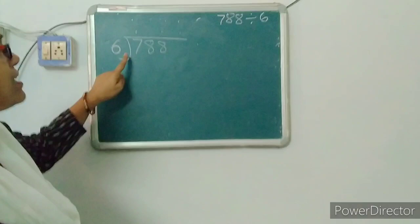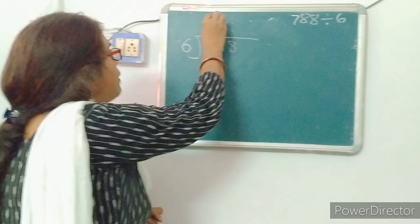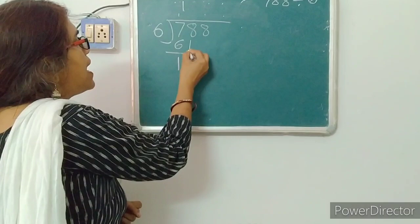Here, 7 is greater than 6, so division is possible. We will start the table of 6: 6 ones are 6, 6 twos are 12. We will divide by 1 time: 6 ones are 6. 7 minus 6 is 1. And the next number is 18. Now we will divide 18 by 6 using the table of 6.